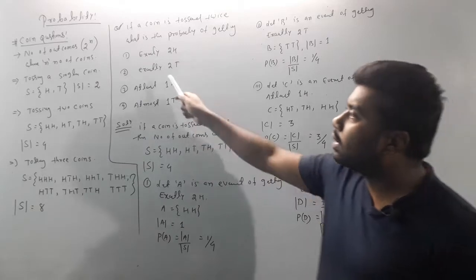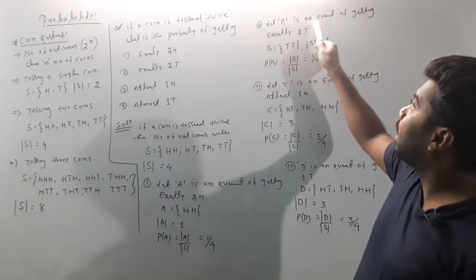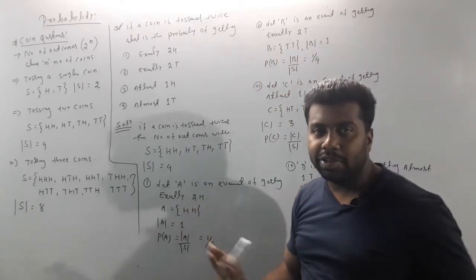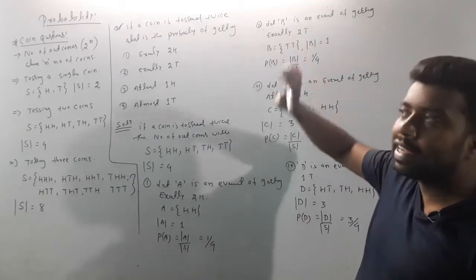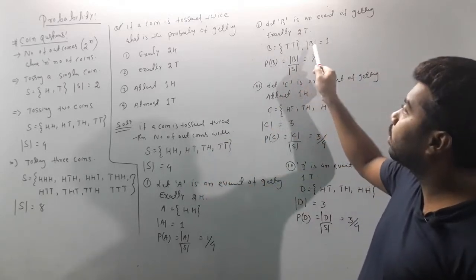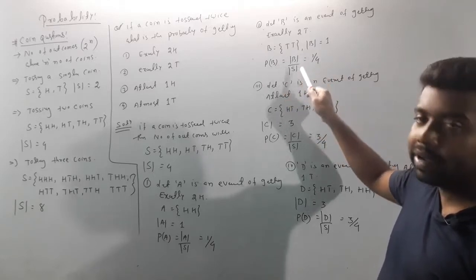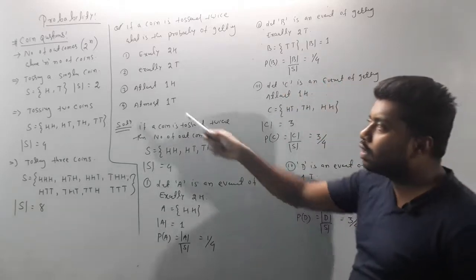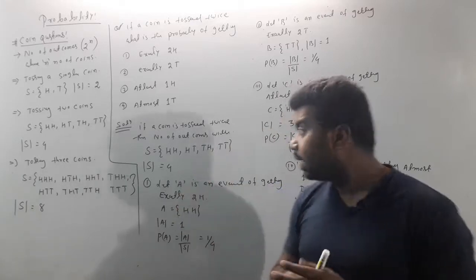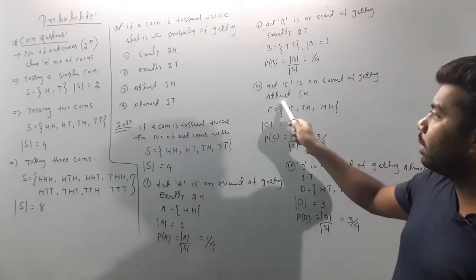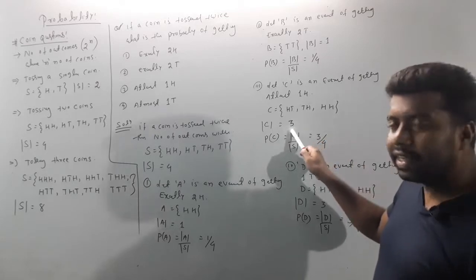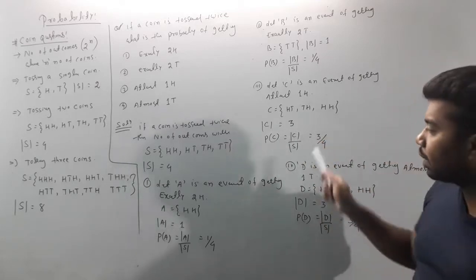Second: Let B be the event of getting exactly two tails. B = {TT}, so P(B) = 1/4. Third: Let C be the event of getting at least one head. At least one head means HH, HT, TH — so |C| = 3. Therefore P(C) = 3/4.